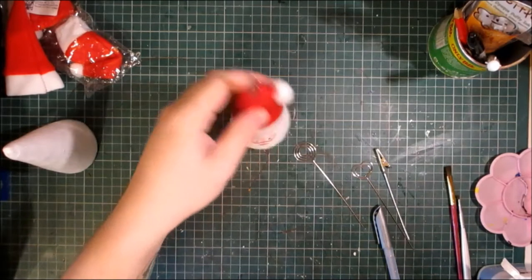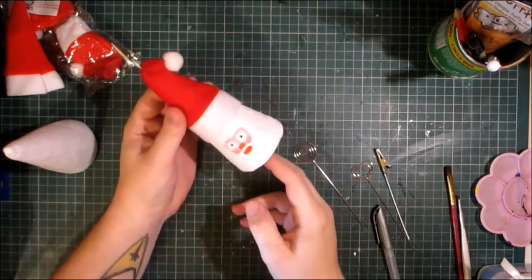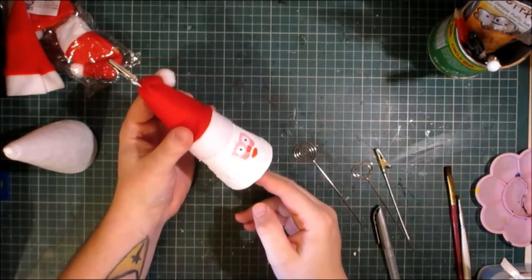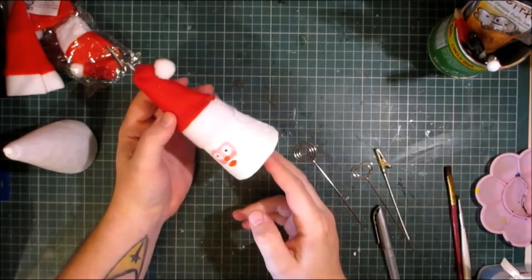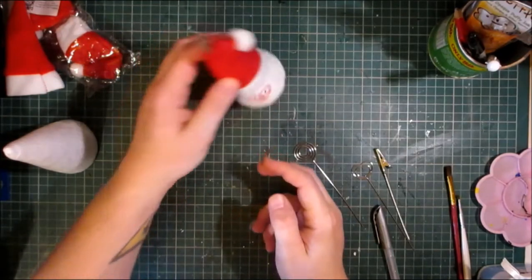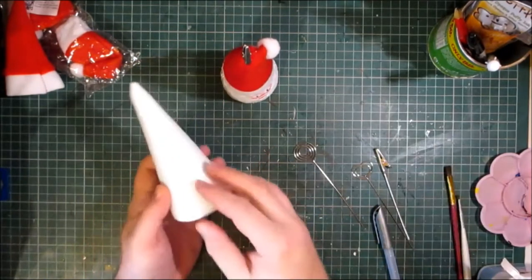Hello crafters, welcome to G's Creations. Today we're going to be making one of these name place holder, made from the polystyrene cone and these are made from the mini Santa hats.